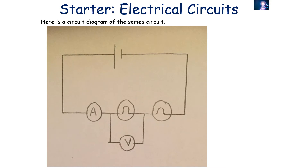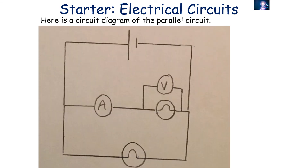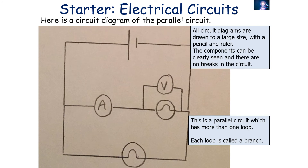Here's the circuit diagram of a series circuit. All circuit diagrams should be drawn to a large size with a pencil and a ruler so the components can be clearly seen with no breaks. In a series circuit it's one big loop. Note that a voltmeter does not count as a loop since it is a special case. Here is a circuit diagram of a parallel circuit — you can see there is more than one loop, and each loop is called a branch.